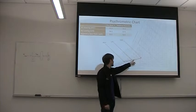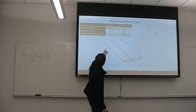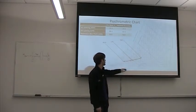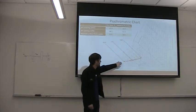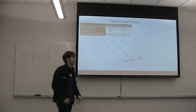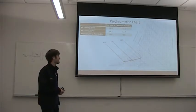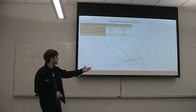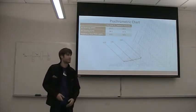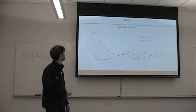And then this is the psychrometric chart. So for this you can estimate your apparatus dew point. You graph your air entering the system. And then the plot of the point of the air leaving the system with the dry bulb temperatures and your relative humidities. And then with the straight line you can estimate your apparatus dew point here on the chart.